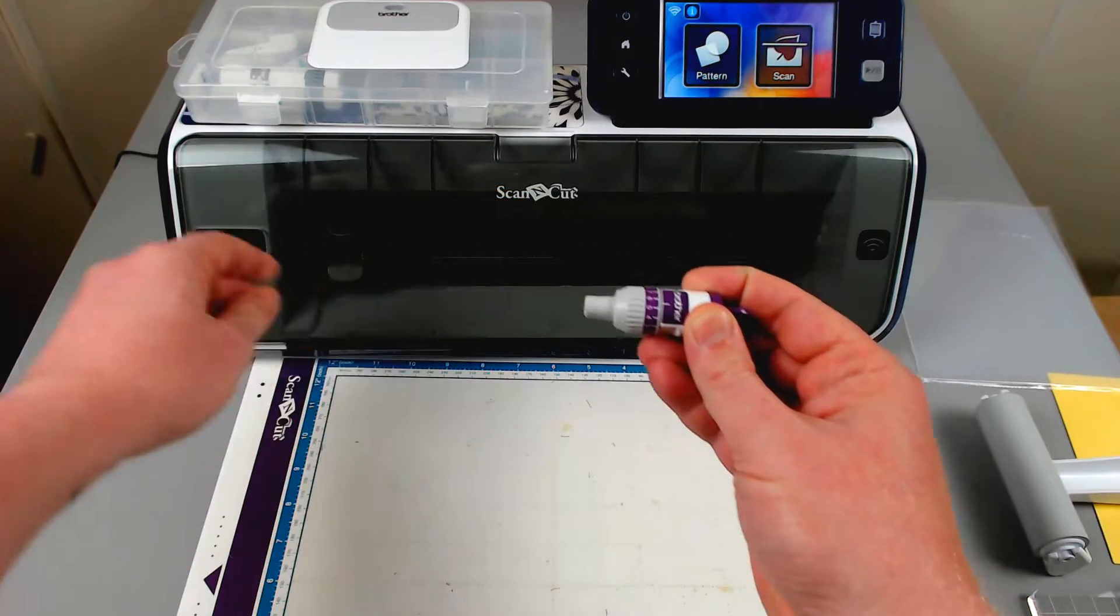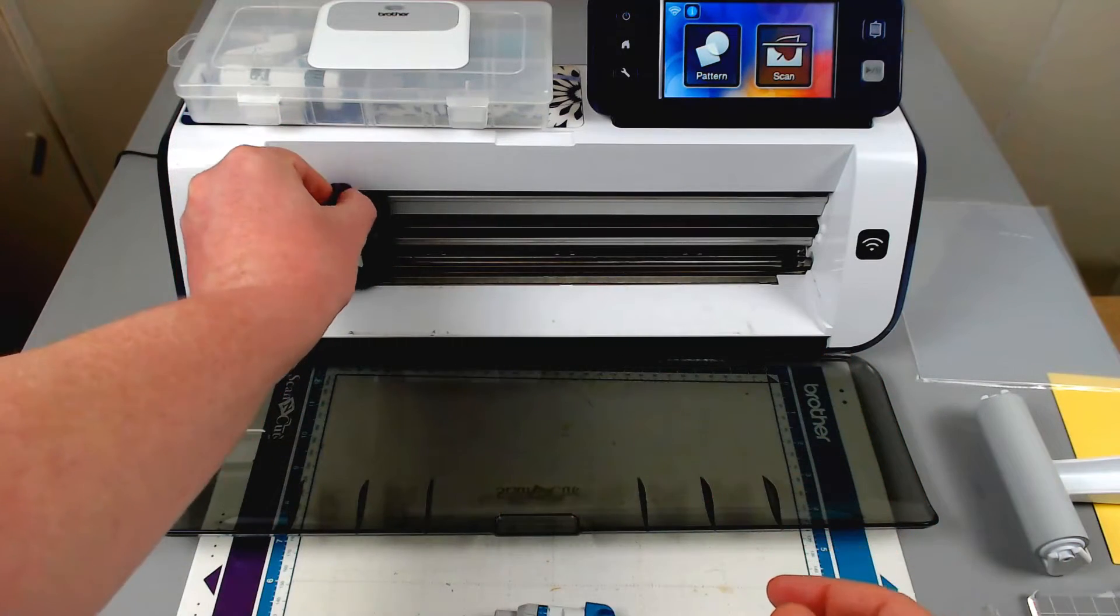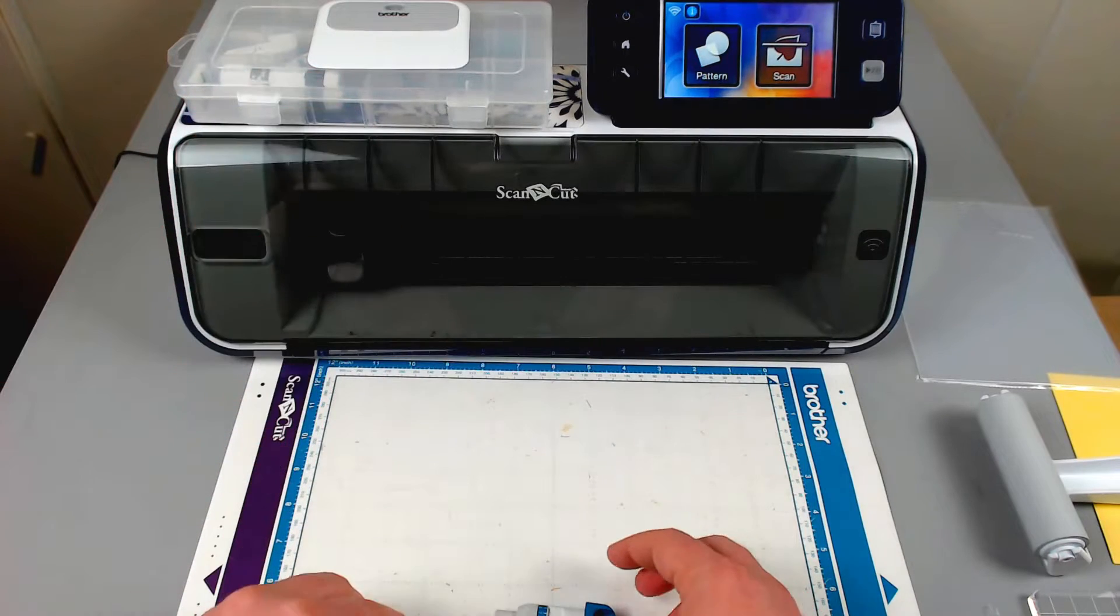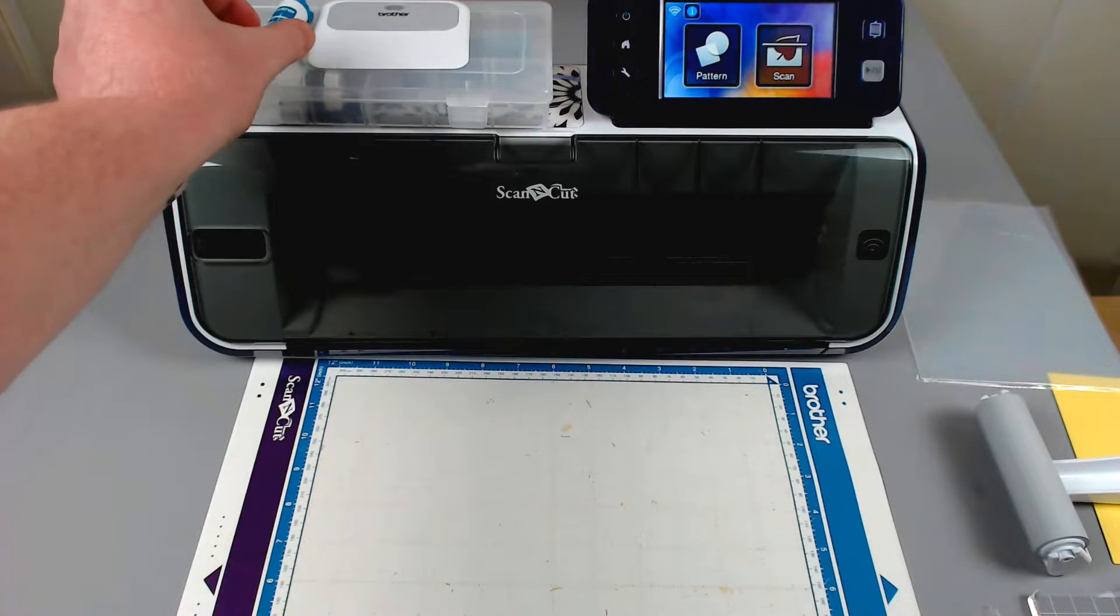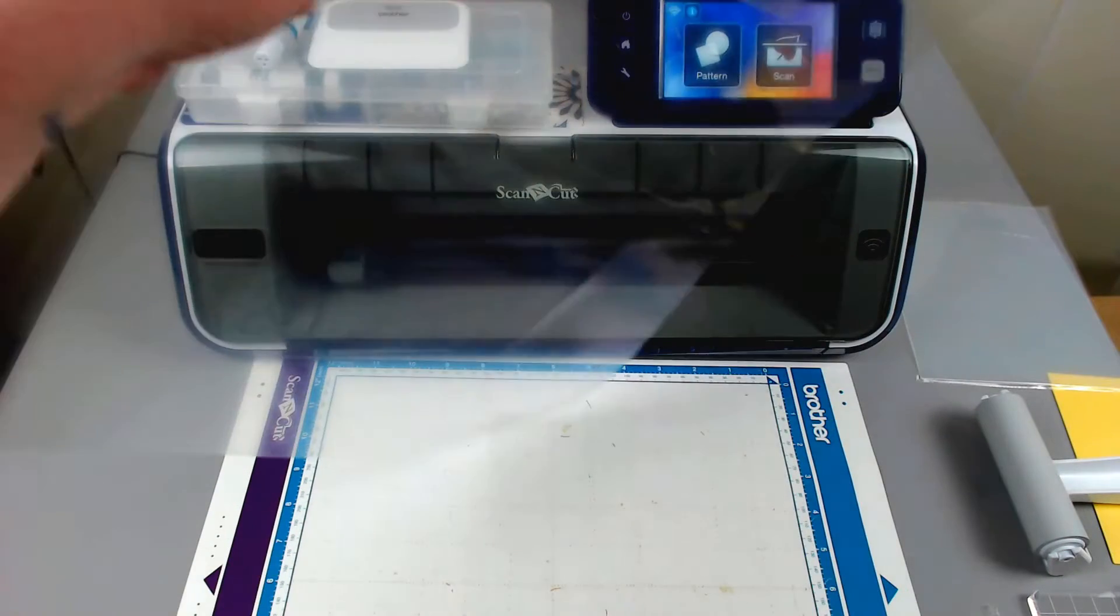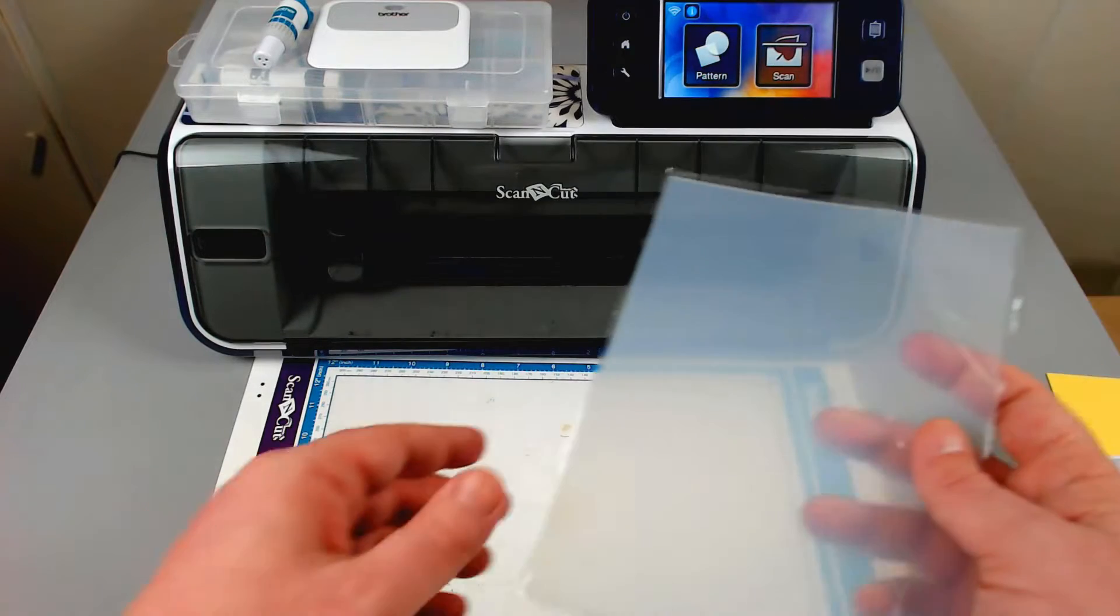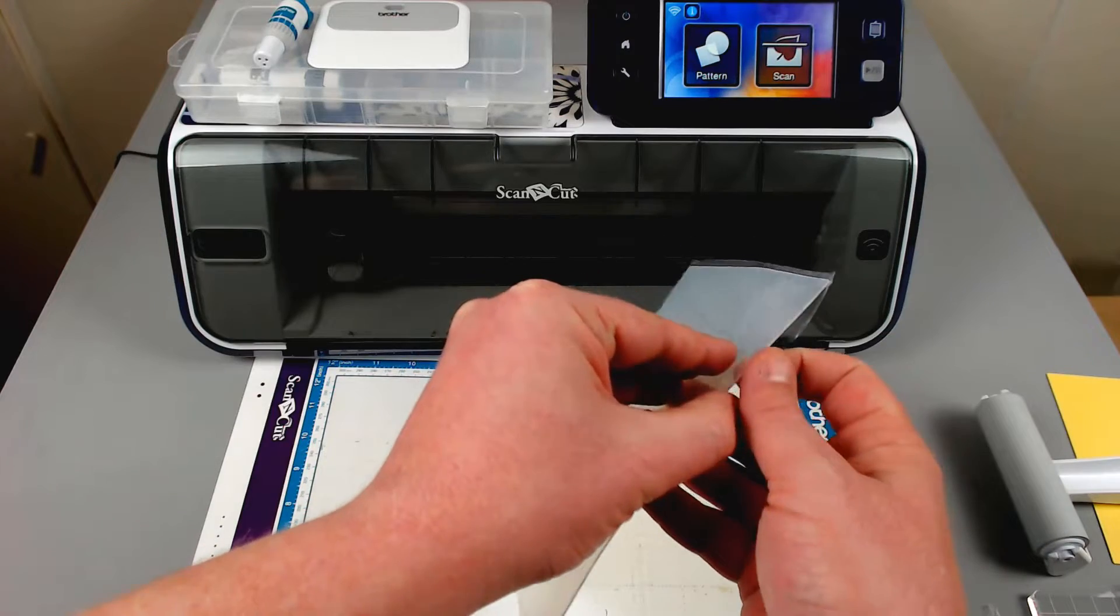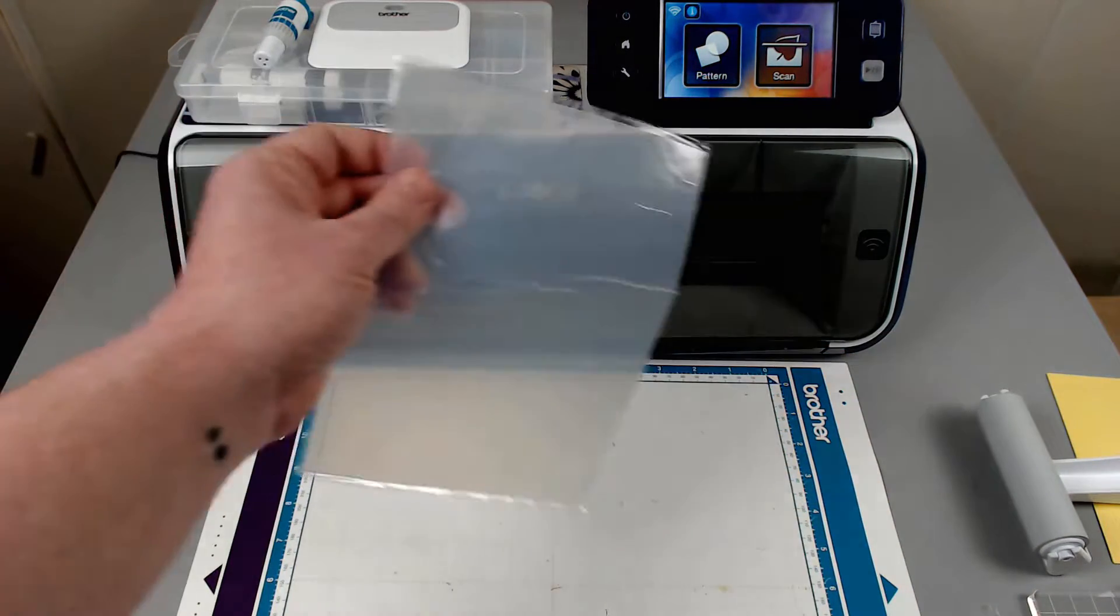The settings recommended are between 6 and 6 and a half on the blade holder itself. I have gone for 6. I will remove the protective sheet from my cutting mat and peel away one of the covers from the silicone sheet and place this on my cutting mat.